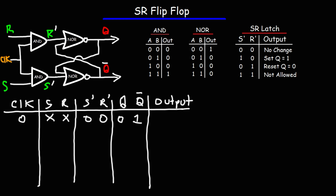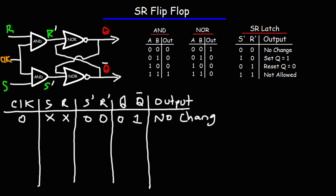Whenever S prime and R prime are both 0, whatever the output is it's not going to change. Now let's put a 1 for the clock signal and a 0 for both S and R.